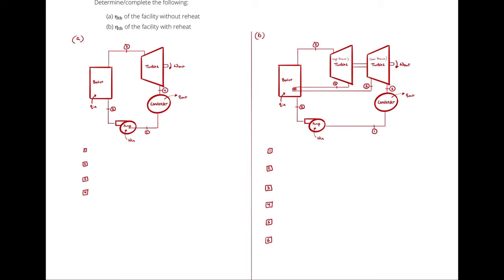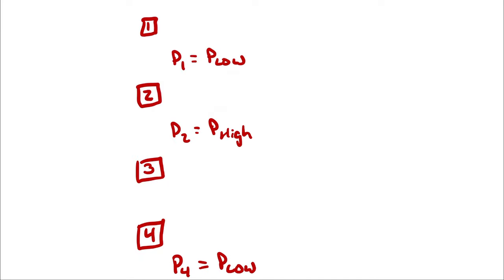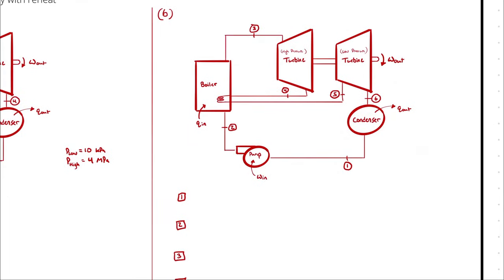In the simple non-reheat Rankine cycle, we only have two pressures: a high pressure of 4 megapascals and a low pressure of 10 kilopascals. States 1 and 4 are at the low pressure, and states 2 and 3 are at the high pressure. In the reheat version, states 6 and 1 are at 10 kilopascals, states 2 and 3 are at 4 megapascals, and states 4 and 5 are at the intermediate reheat pressure of 400 kilopascals.